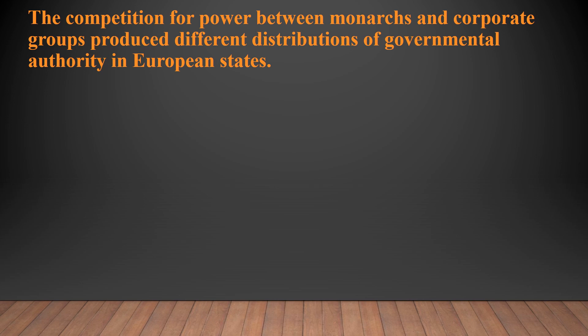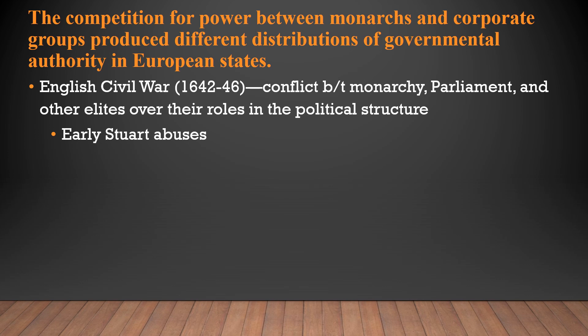The competition for power between monarchs and corporate groups produced different distributions of governmental authority in the European states. One excellent example is the English Civil War, fought from 1642 through 1646 — a conflict between the monarchy, parliament, and other elites over their roles in the political structure, caused by early Stuart abuses. The last Tudor monarch, Elizabeth, died childless and her cousins, the Stuarts from Scotland, became the new English kings. Early Stuart kings were unpopular: they spent money frivolously, made laws without the consent of parliament, taxed without consent of parliament, and were generally seen as foreigners. Their persecution of Puritans ultimately led to a revolt in the House of Commons.